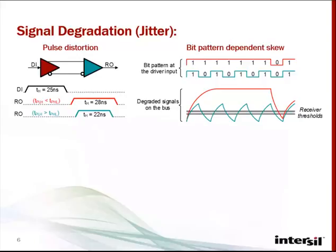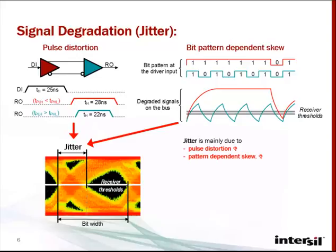The red-bit pattern and its associated signal below is a single zero followed by a long string of ones, which causes a longer fall time and shorter rise time on the bus than a pattern resembling a clock signal, which is shown in blue. Jitter is mainly due to pulse distortion and pattern-dependency skew.